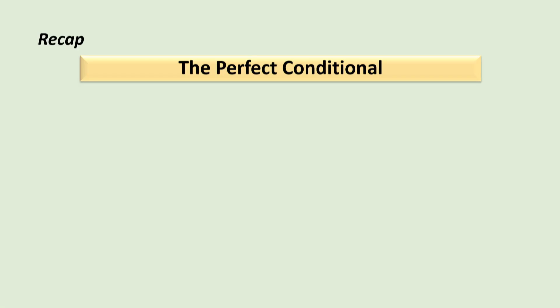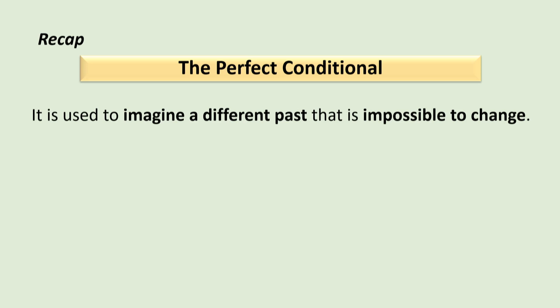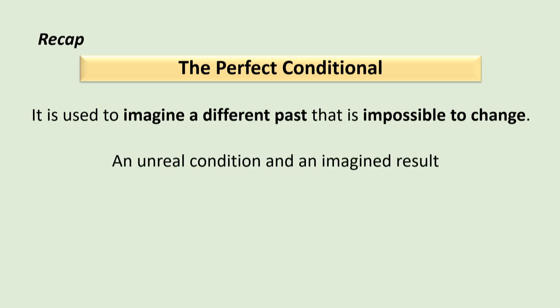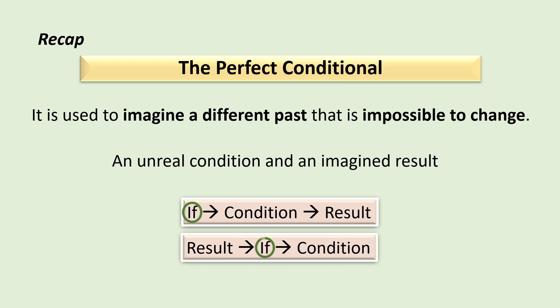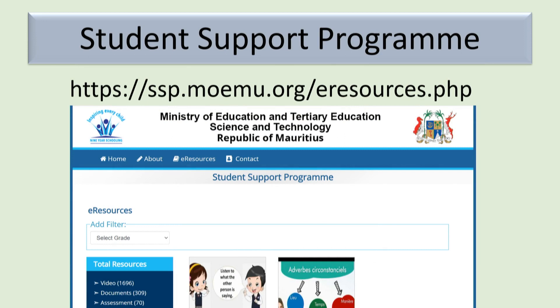So, now we know that the perfect conditional is used to imagine a different past — a past that is impossible to change. We also know that there is always an unreal condition denoted by the word 'if' and an imagined result. We have also seen that the part of the sentence starting with 'if' can be at the beginning or at the end of the sentence. In part two on the perfect conditional, we will look at how this tense is formed. You can see this lesson over again on the SSB website. Thank you for watching. Goodbye.